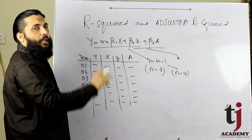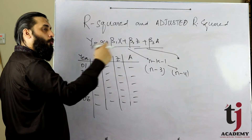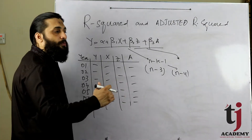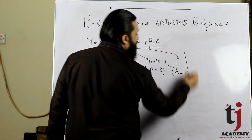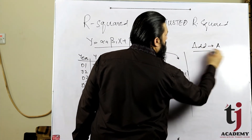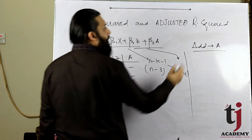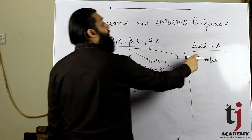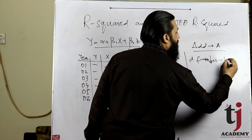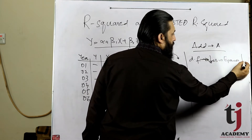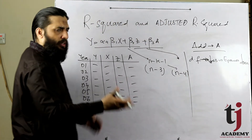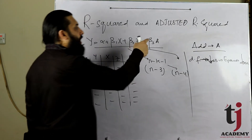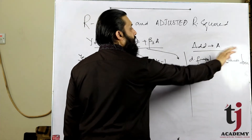کسی بھی variable کو add کریں گے تو degree of freedom کم ہو جاتی ہے۔ یعنی additional information کم ہو جاتی ہے اور explanatory power پہلے کے مقابلے میں کم ہو جاتی ہے۔ تو variable add ہونے سے دو aspects آتے ہیں: ایک تو degree of freedom decrease ہوتی ہے جس کی وجہ سے explanatory/forecasting power کم ہوتی ہے، کیونکہ observations relatively کم ہو جاتی ہیں۔